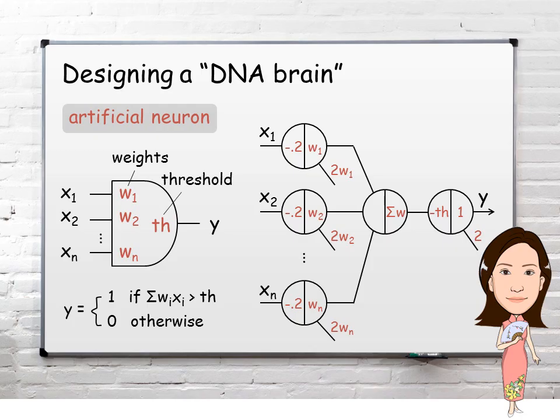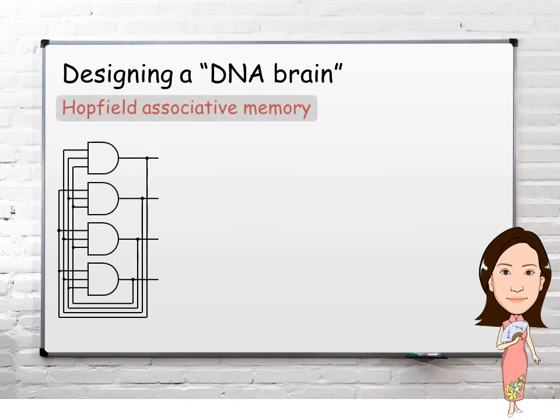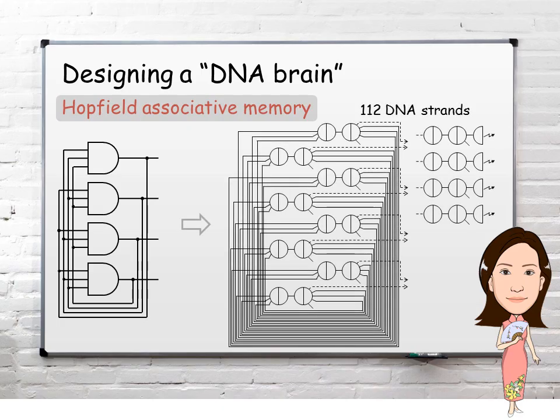A Hopfield associative memory, with four artificial neurons fully connected together, can be implemented with 112 different DNA strands. Before the amount of each molecule is determined, the network has an empty memory. It is capable of remembering various four-bit patterns, but it hasn't been trained yet.